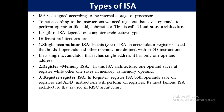The third architecture is register-to-register ISA. In register-to-register ISA, both operands are saved in registers and operations are performed on those registers. It is the most well-known type of ISA architecture and is also used in RISC architecture.